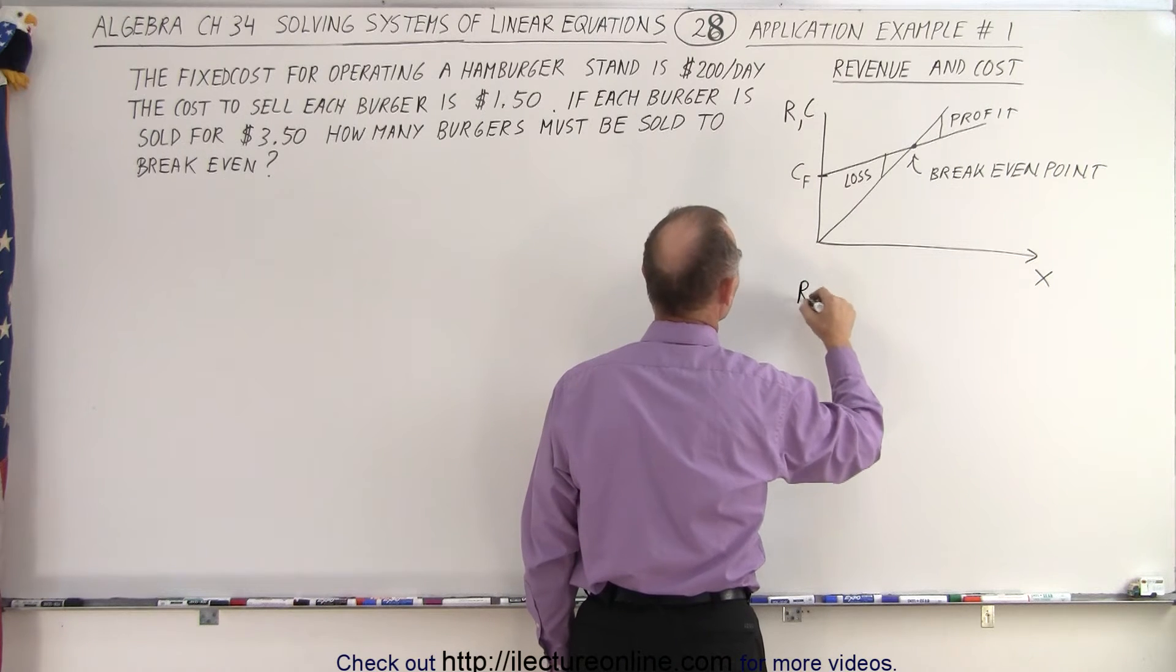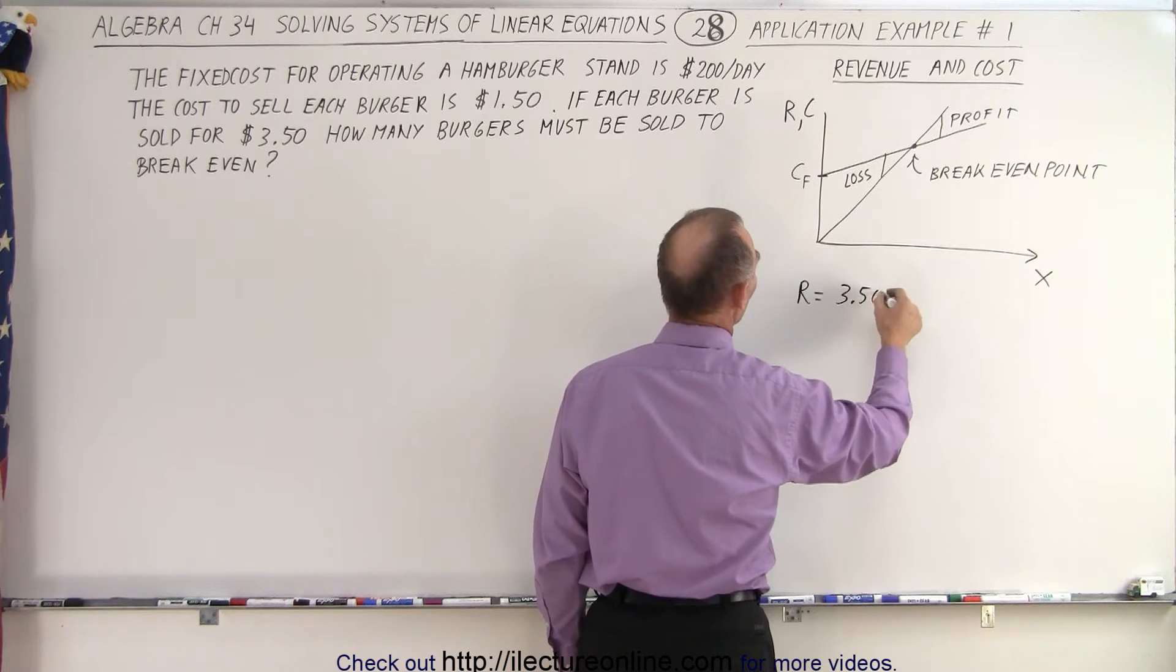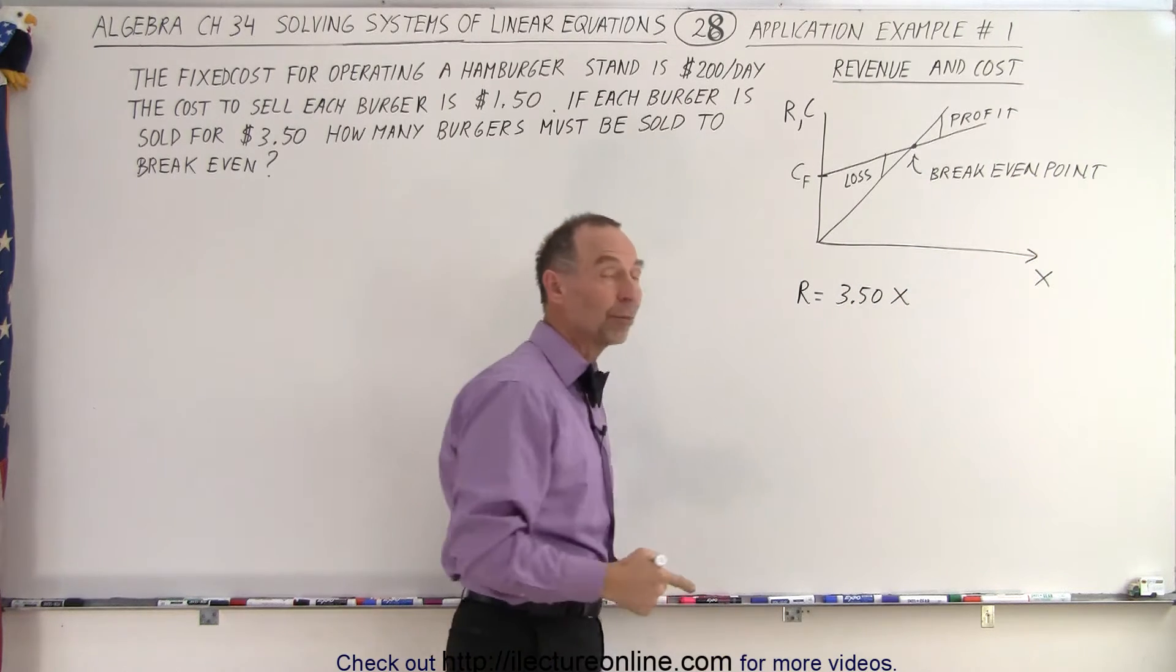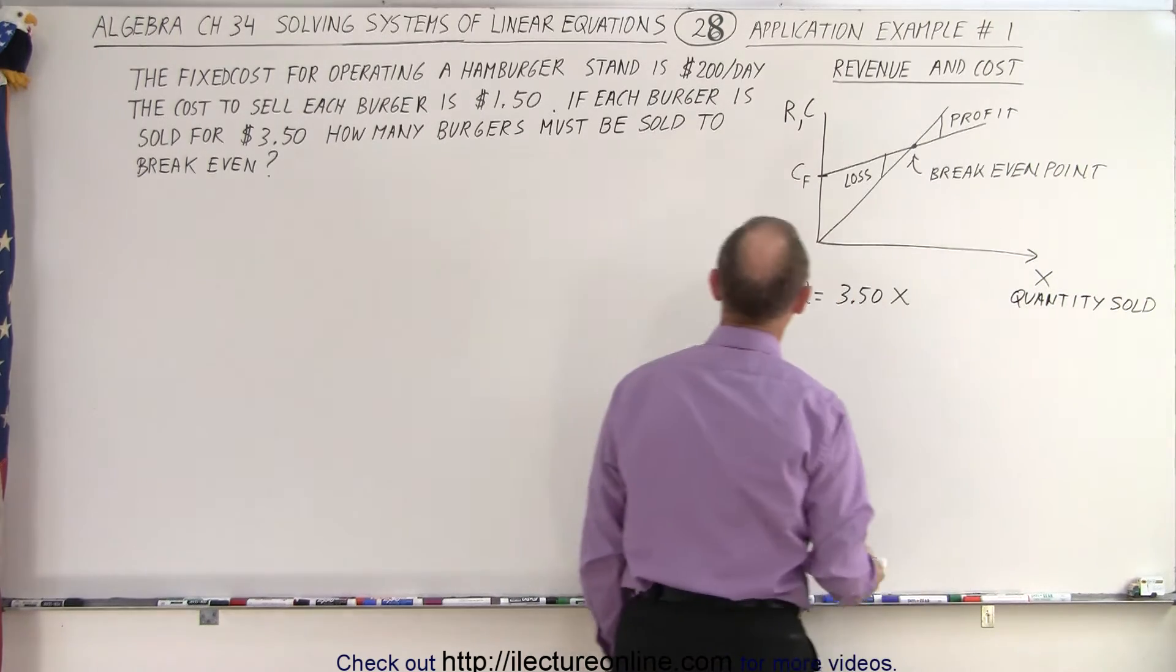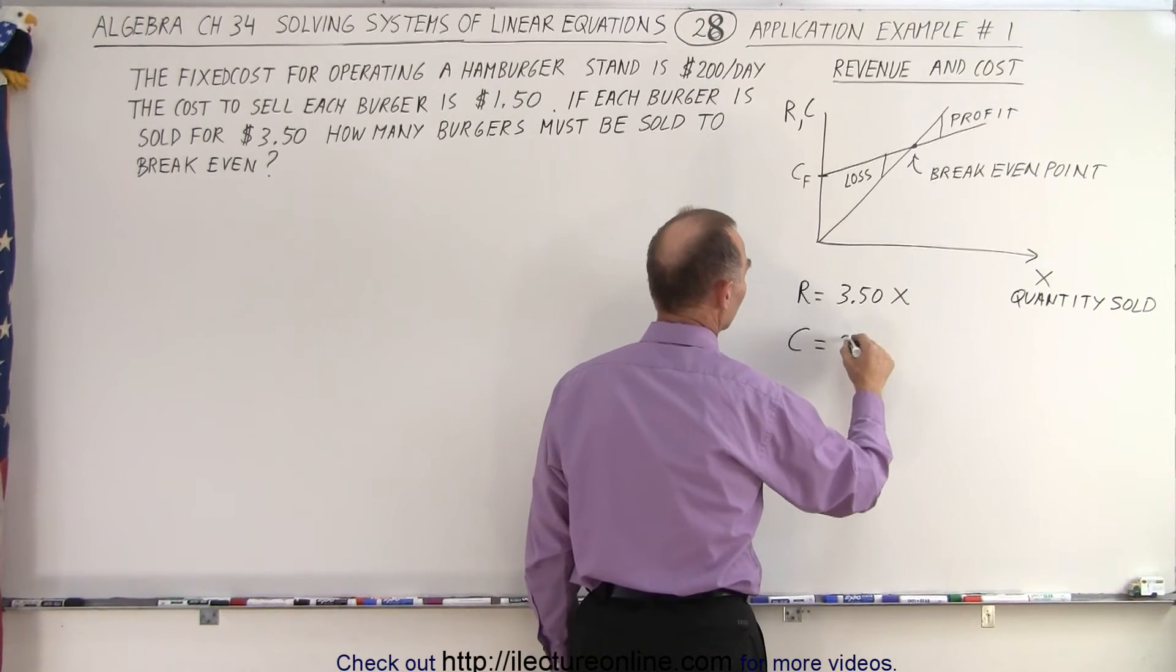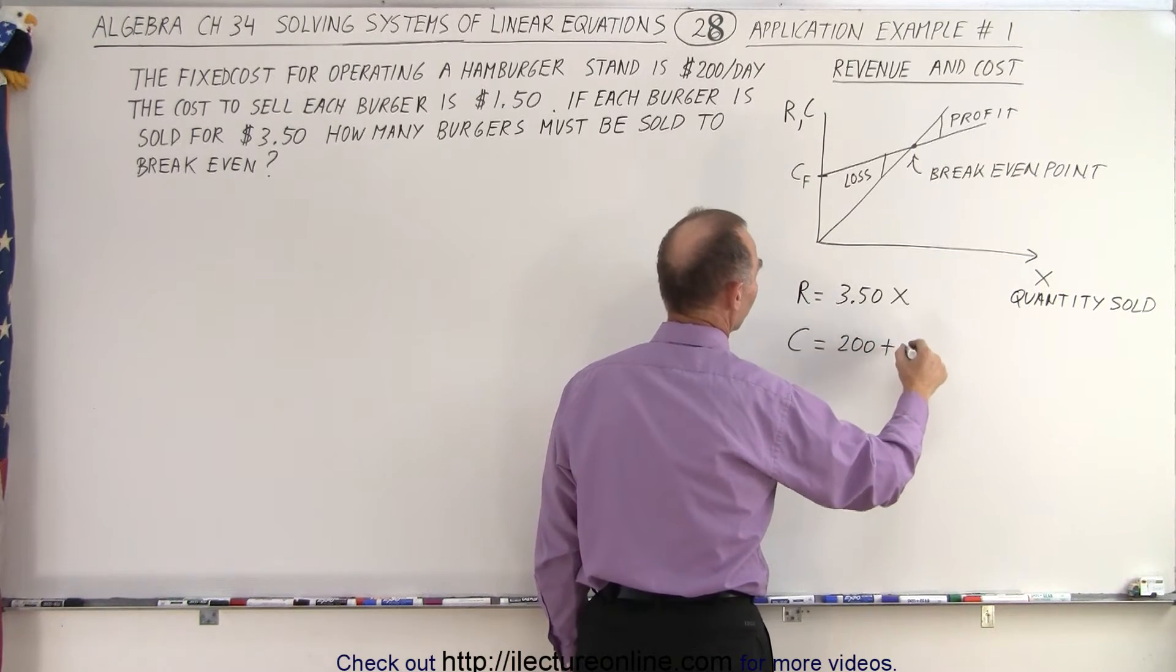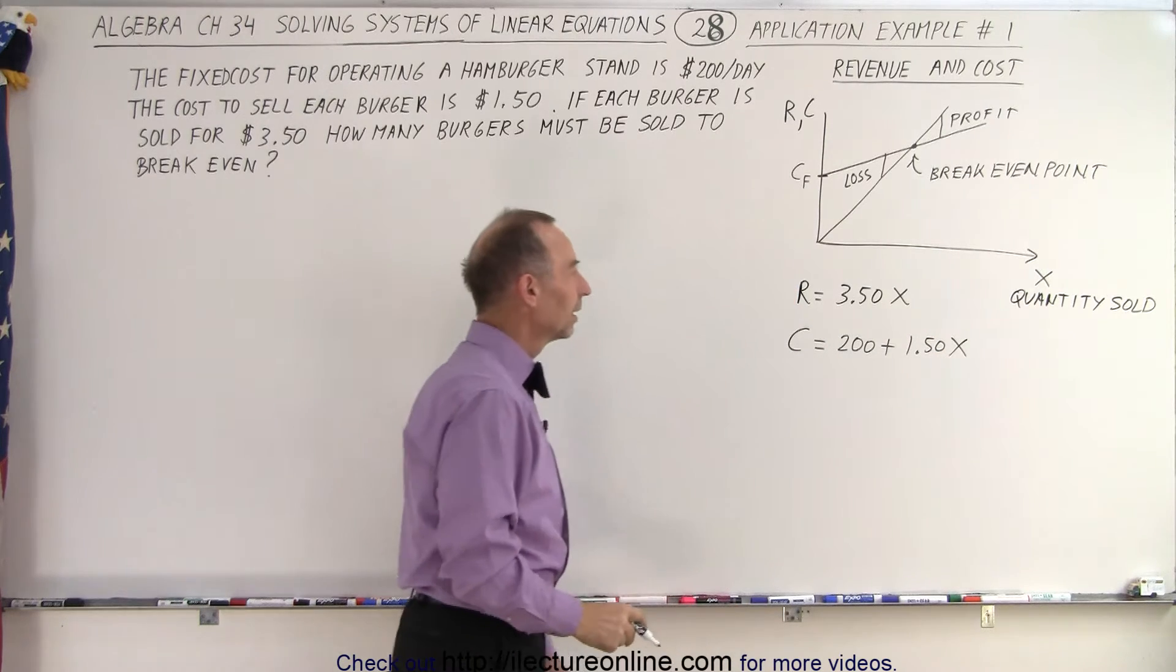We first want to have an equation for the revenue. So the revenue is equal to, well, it's $3.50 for each burger sold. X represents the number of burgers sold, so this is the quantity sold. And the cost, well, that's going to be the fixed cost, which is $200 per day, plus the variable cost, which is $1.50 times x.